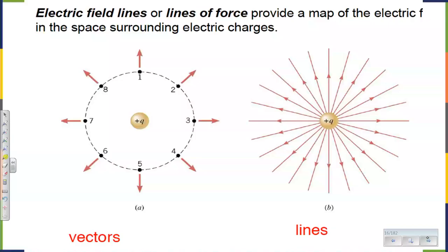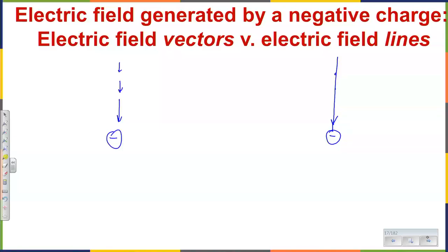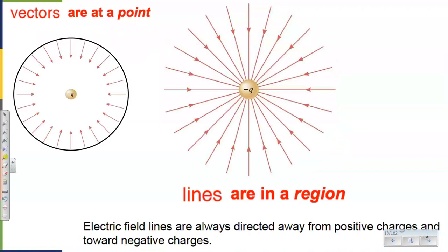The rule for the lines is the same as for vectors — the lines begin on positive charge and move away from it directly. And of course we can apply the same reasoning for a negative charge. If I don't want to draw all possible vectors, I can draw a line — this line represents all possible vectors. And for a negative charge, electric field lines are radial but point toward the charge. That's the picture.